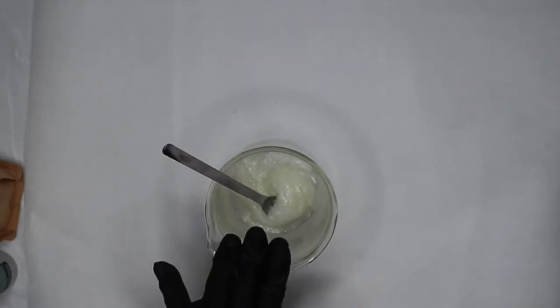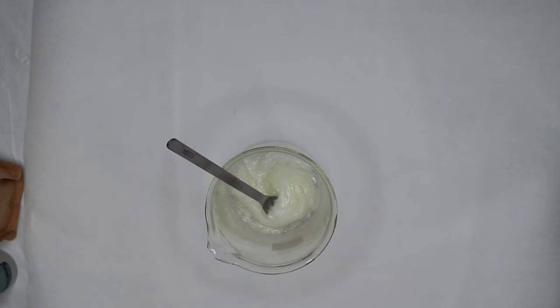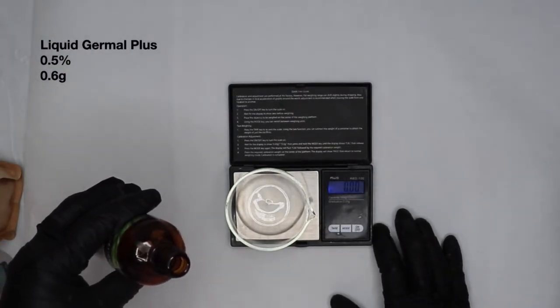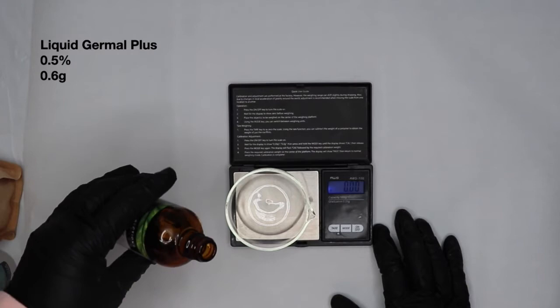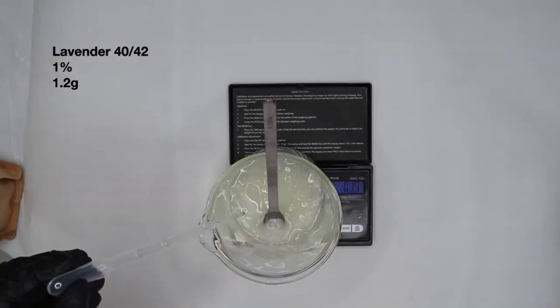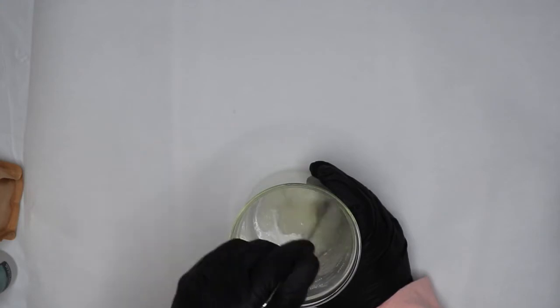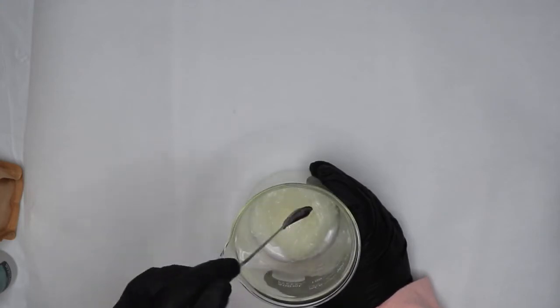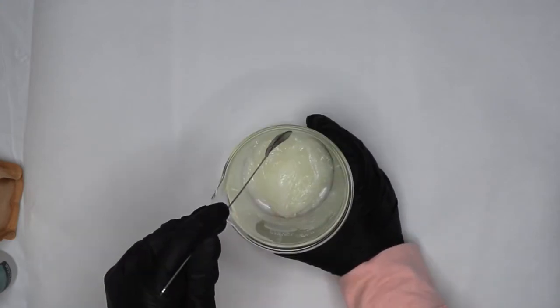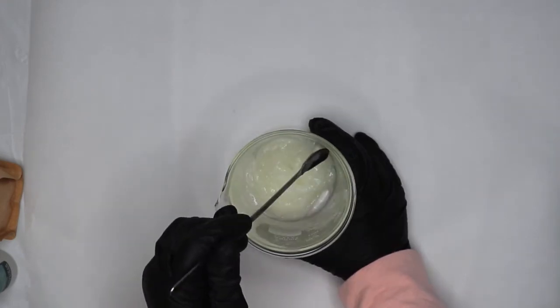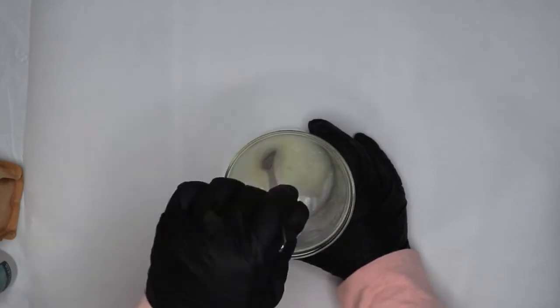At this point is where I would like to add my preservative and my essential oil as well as my coloring. So here I will be measuring my preservative liquid germoplus at 0.6 grams, 1.2 grams of lavender 4042. And I will not be adding any emulsifier to this because it is only 1% essential oil, so it doesn't exceed the amount that the AS40 can emulsify.